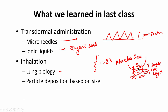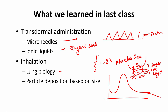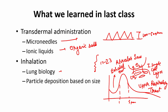Then we talked about how particle deposition on the basis of size happens in the lungs. For deep lung deposition we found that the particle size range is about 1 to 5 microns. Anything below that gets exhaled out and anything above gets deposited in the upper respiratory tract. That is what we discussed in the last class; let us continue our discussion on inhalation in this class.